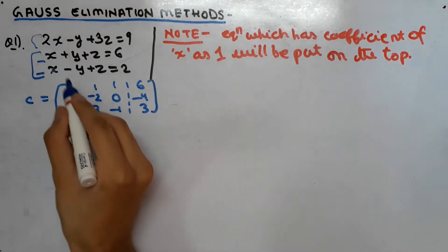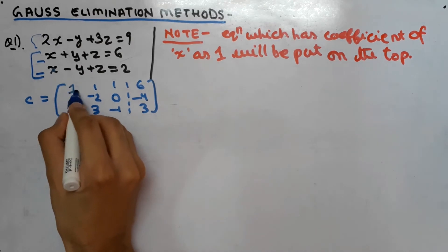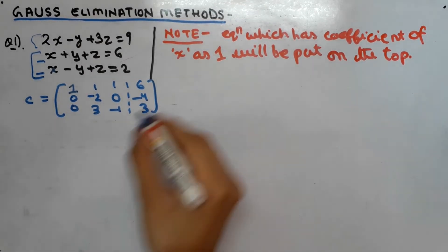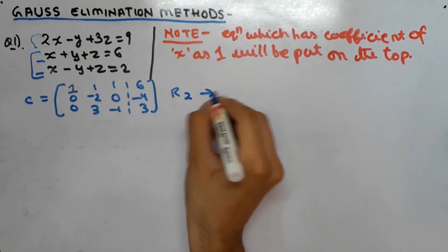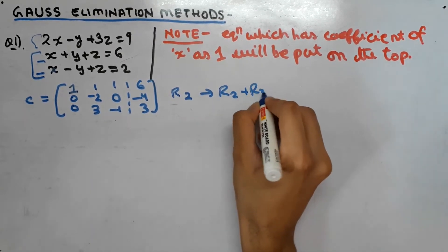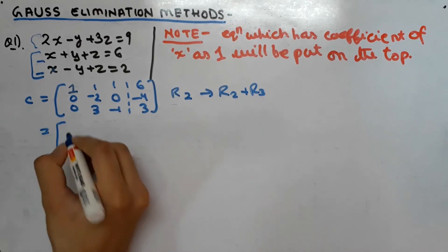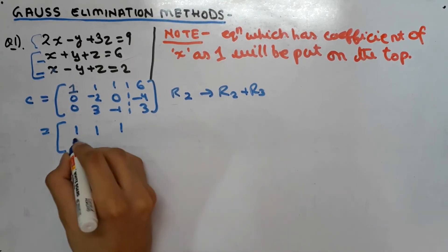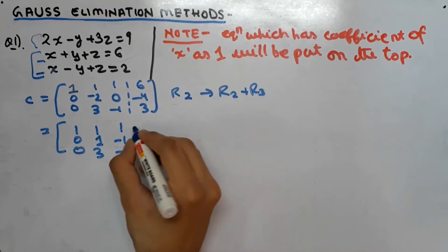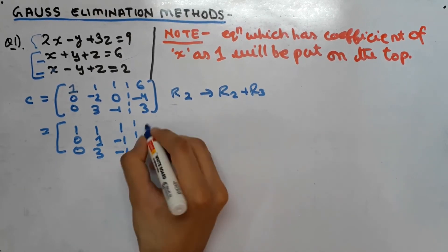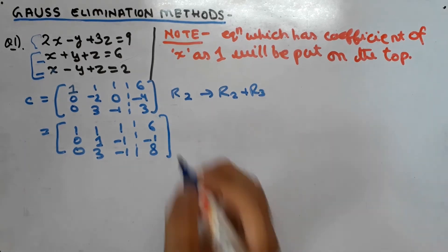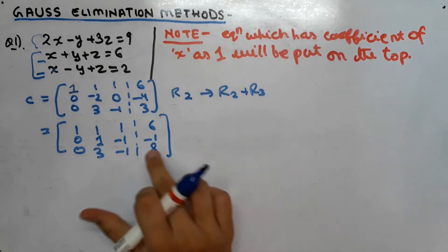In the previous steps we obtained this matrix. We still have to do a couple more row transformations to get echelon form. We change R2 → R2 + R3, giving matrix: row 1: 1, 1, 1; row 2: 0, 1, -1; row 3: 0, 3, -1, with B column: 6, -1, 3. Wait — correction: that last B value is 3.